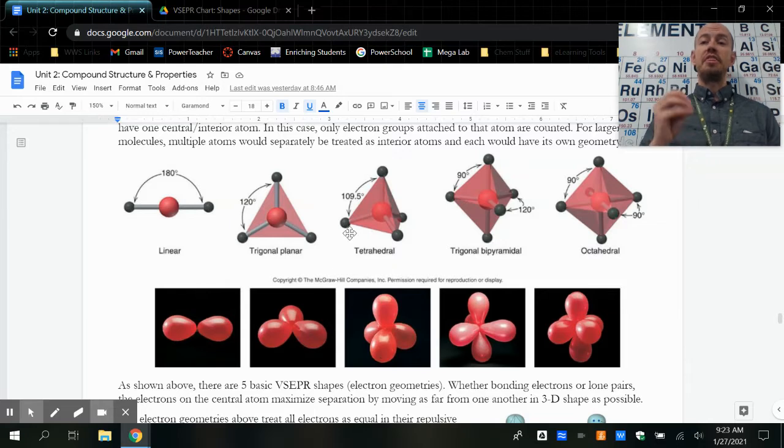When there is a fourth thing on my central atom, then those four things spread out as far from one another as possible. One, two, three, four. Four is tetra, so we have a tetrahedral shape, or we've got this three-dimensional triangle.